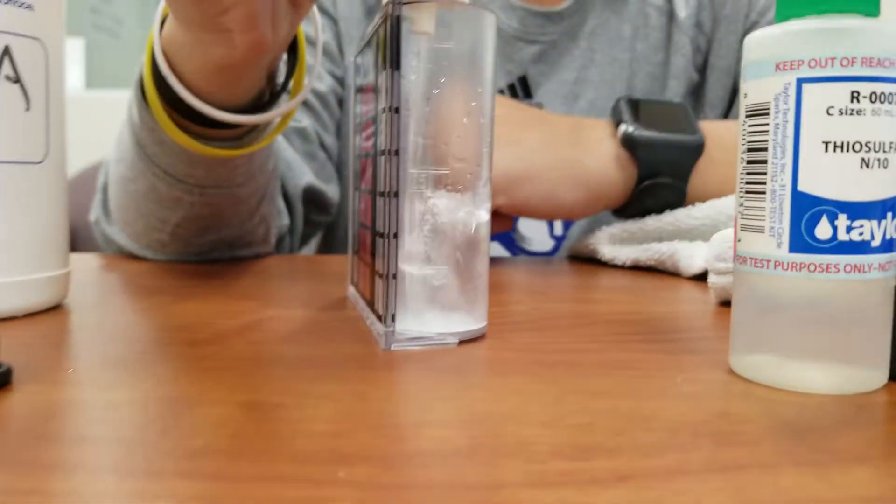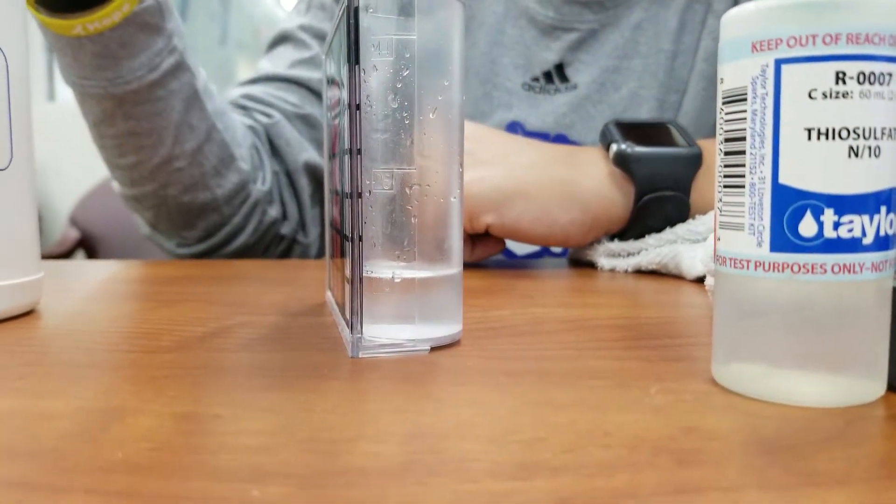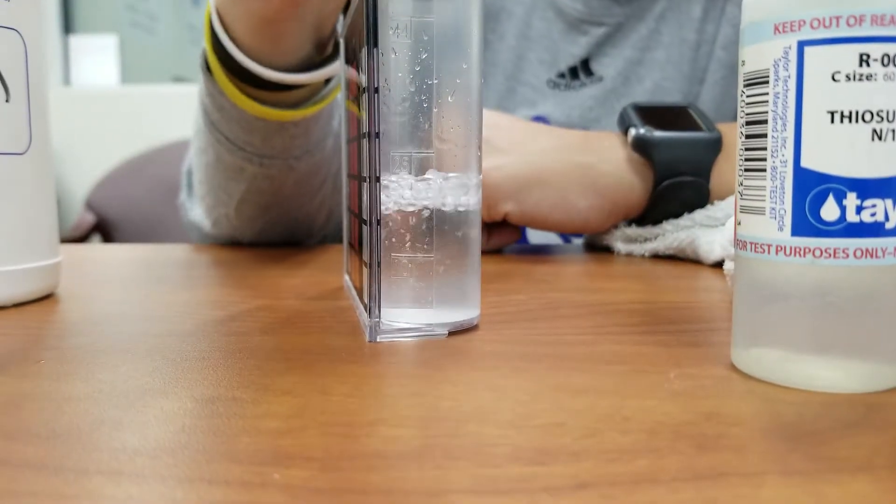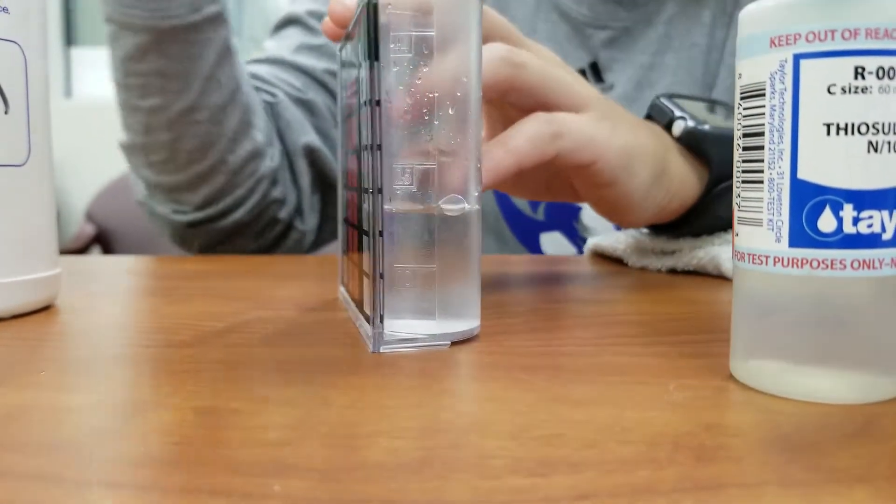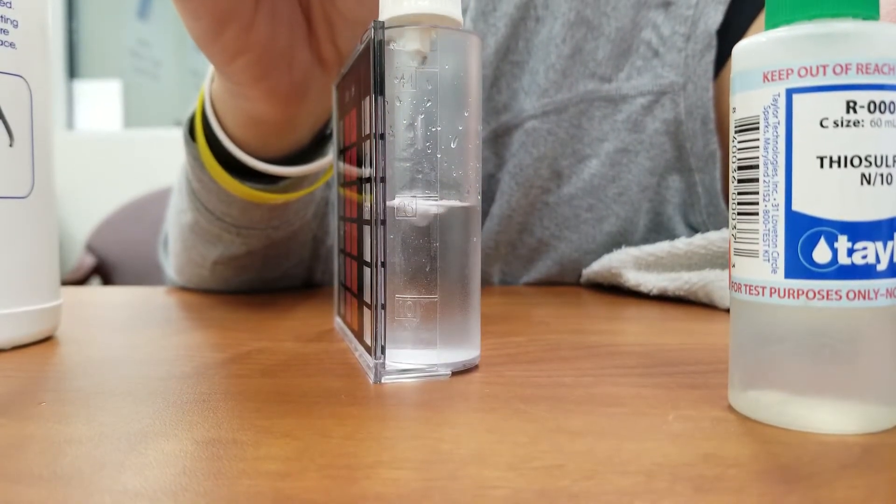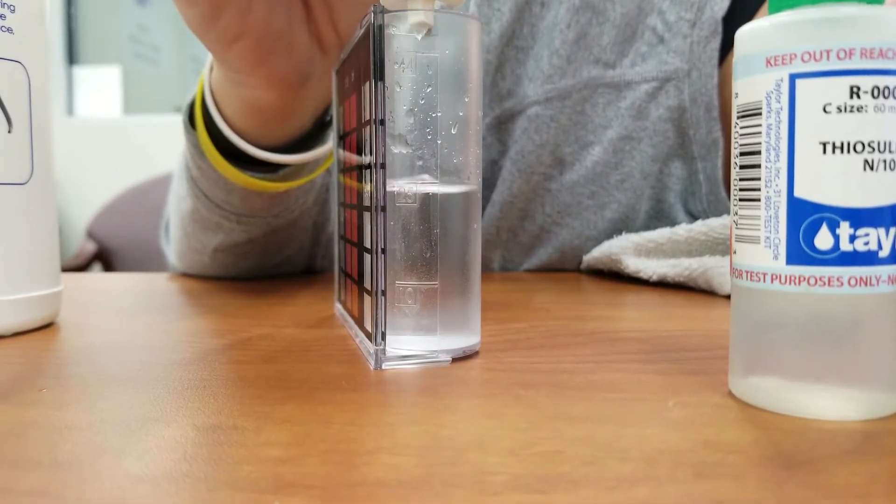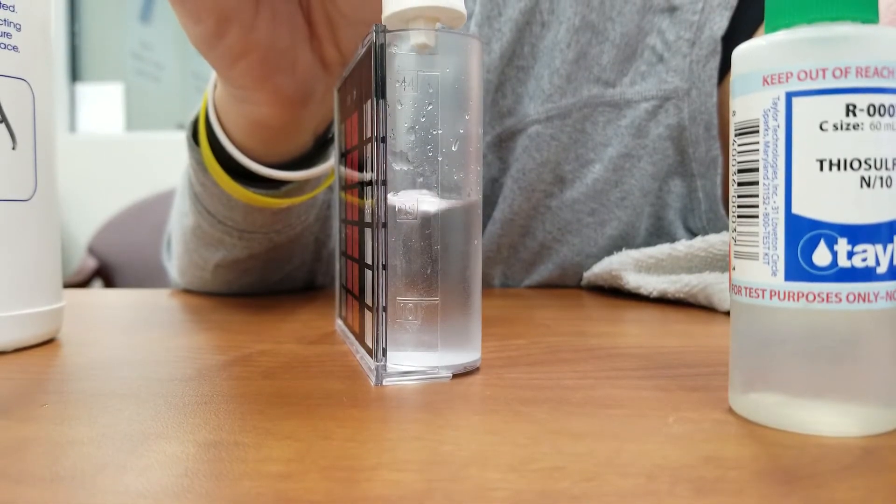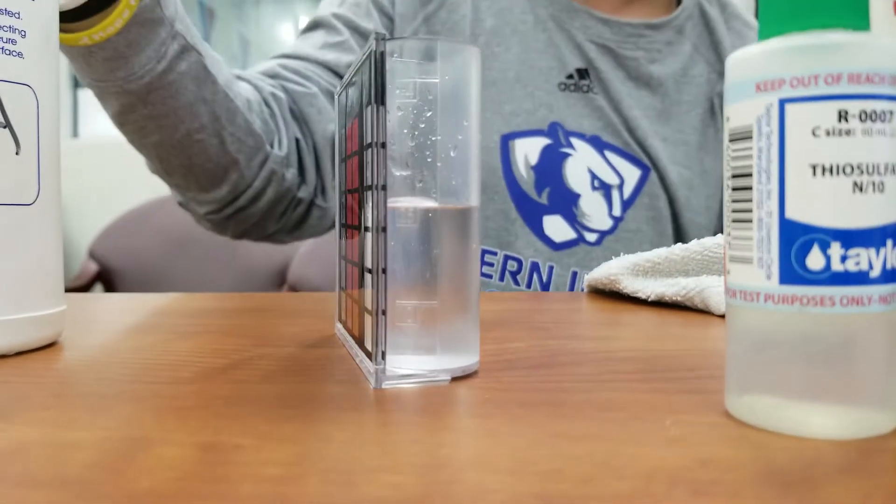We're going to use the large tube on our compartmenter. Over here, we're looking for the 25 mark. And again, we want to make sure that we get the bottom of the water line over that 25 mark. Let's make sure we get just the right amount.